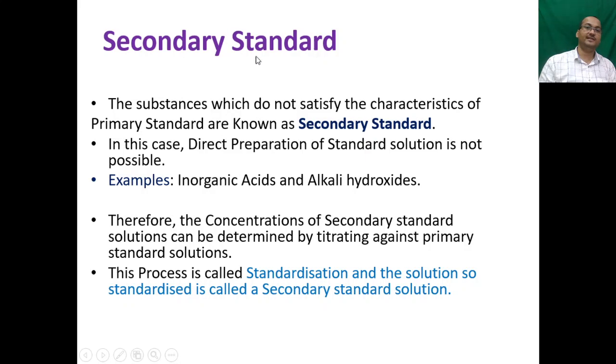The next question arises, what is secondary standard? The substances which do not satisfy the characteristics of primary standard are known as secondary standard. In this case, direct preparation of standard solution is not possible. For example, inorganic acids and alkali hydroxides. These are secondary standards. Therefore, the concentrations of secondary standard solutions can be determined by titrating against primary standard solutions. This process is called standardization, and the solution so standardized is called a secondary standard solution.